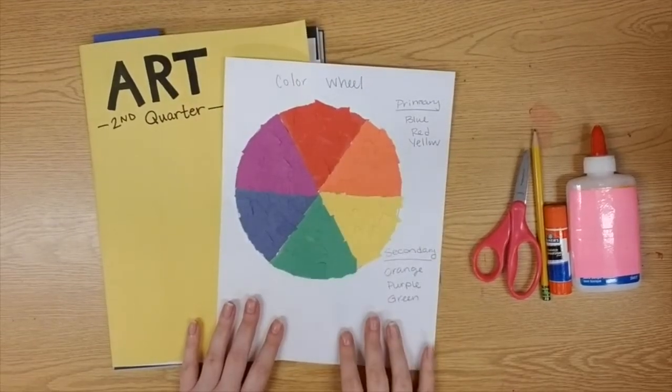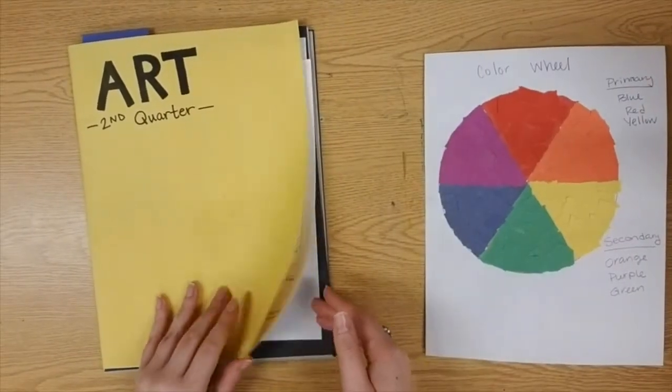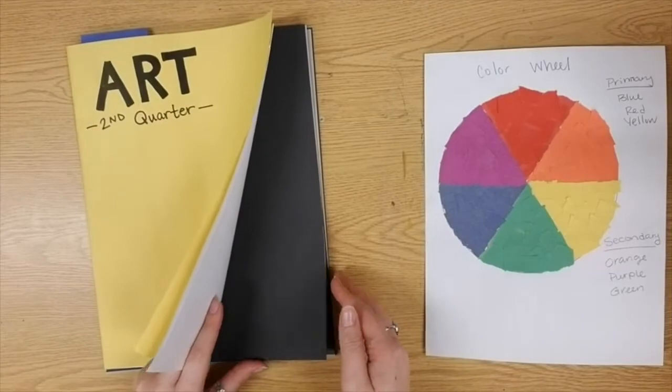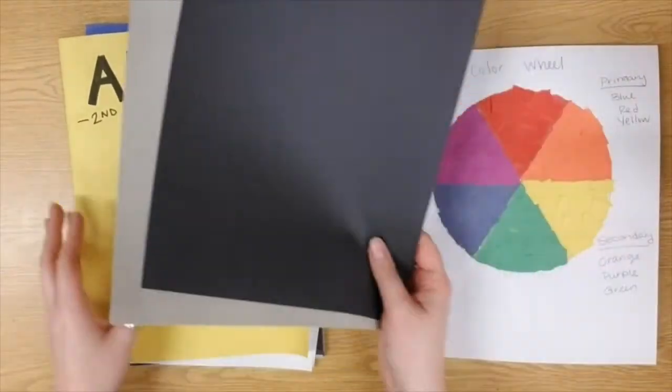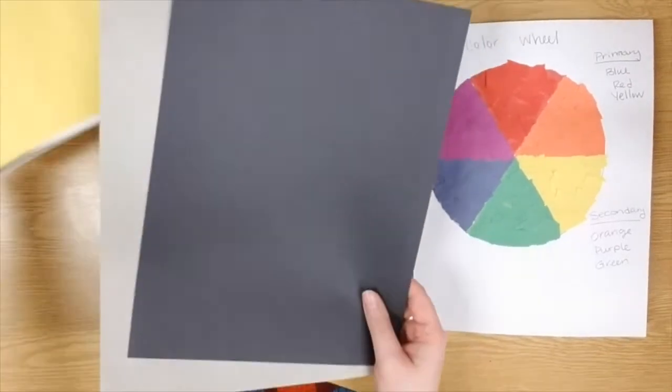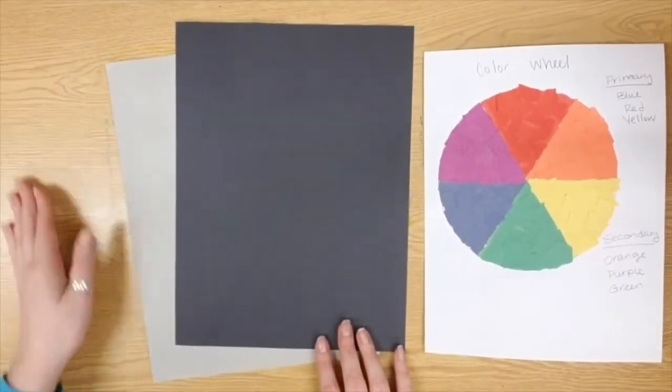Now besides your finished color wheel artist there's actually two more things that I need to take out of my art folder today. The first is a black piece of paper and the second is a gray piece of paper. These should be the last two pieces that you have in your second quarter art folder my friends.